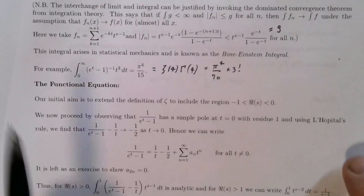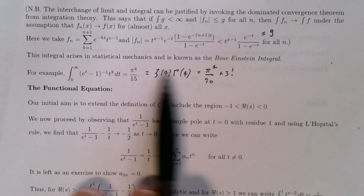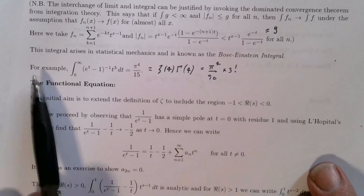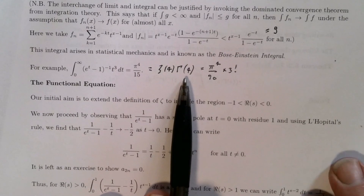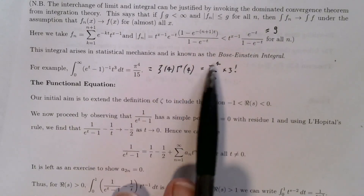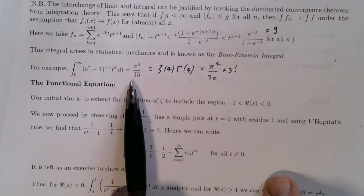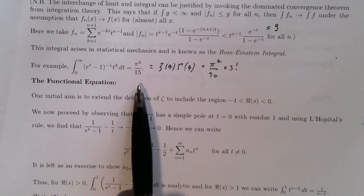This integral arises in statistical mechanics and is sometimes known as the Bose-Einstein integral. As a simple example: the integral from 0 to infinity of t cubed over e to the t minus 1 dt equals zeta of 4 times gamma of 4 by our formula. Since zeta of 4 equals pi to the fourth on 90 and gamma of 4 equals 3 factorial, this collapses to pi to the fourth on 15. In our next section we'll develop the functional equation for the zeta function, enabling an analytic extension of zeta across the whole complex plane.